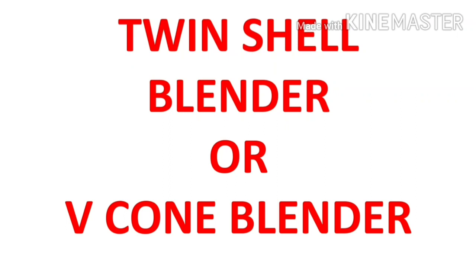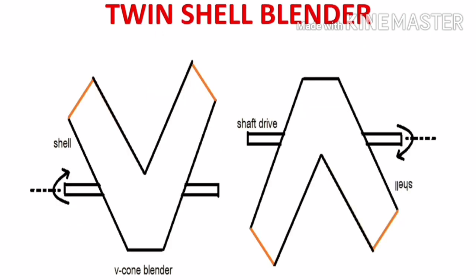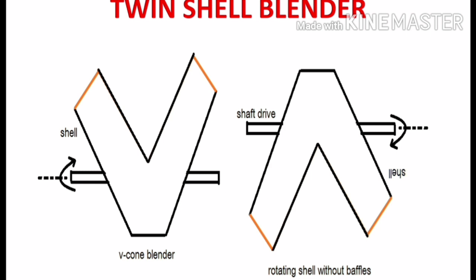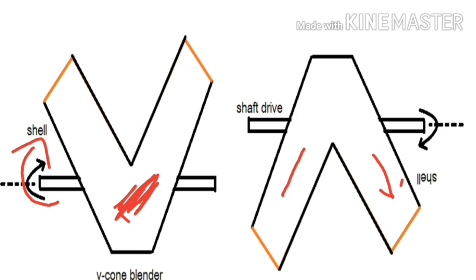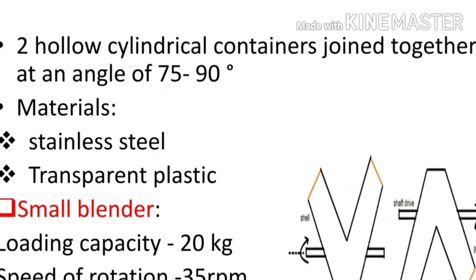Welcome to Shruti's Farmer World. In this video we are going to talk about the twin shell blender. Here you can see the pictorial representation of the twin shell blender. Because of its shape, this blender is also known as V-cone blender. The principle involved in the twin shell or V-cone blender is diffusion phenomena. This equipment is mainly used to mix granular solids.